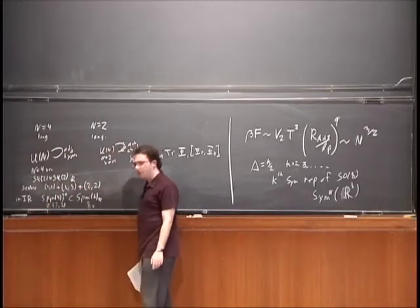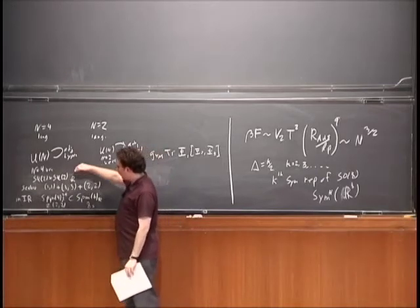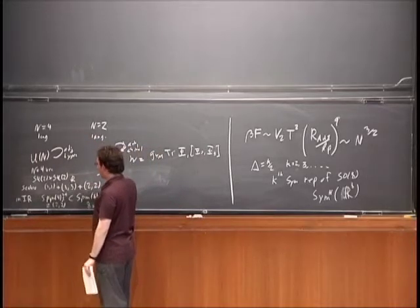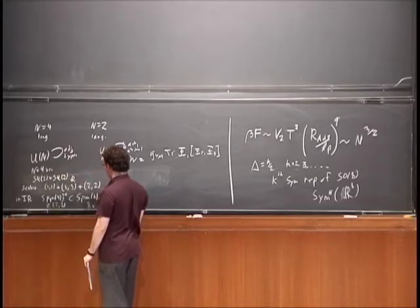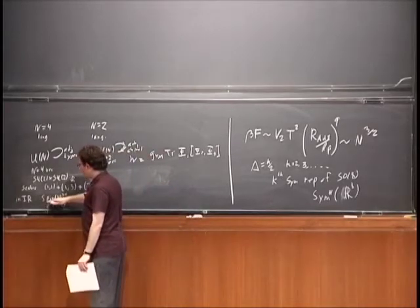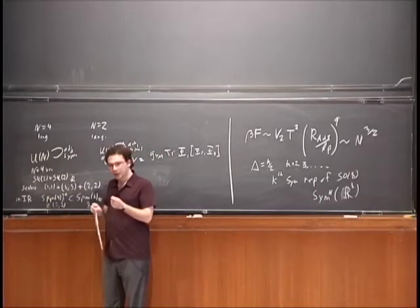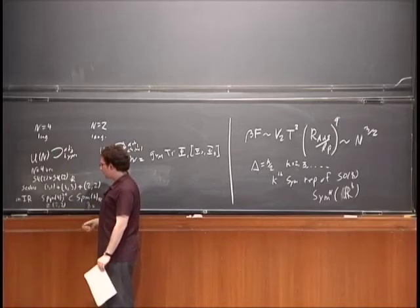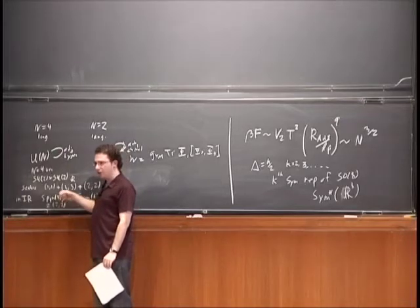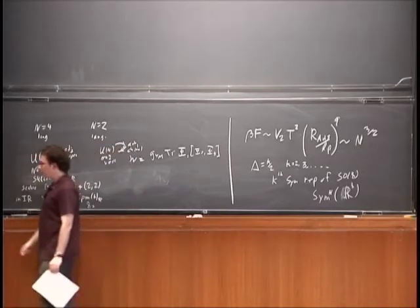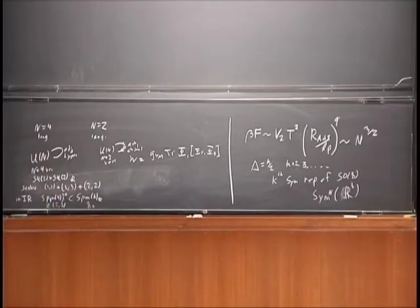The R-symmetry in the infrared, which sits in the N=4 multiplet together with the conformal transformations and controls the dimensions of operators, is not even a symmetry of the UV theory. It sits inside the full Spin(8), but not in the Spin(7) subgroup that is manifest in the UV theory.